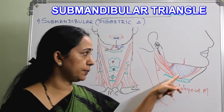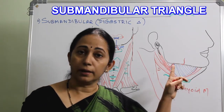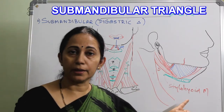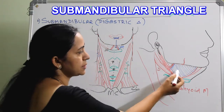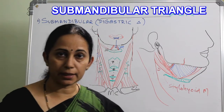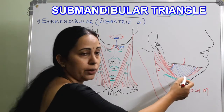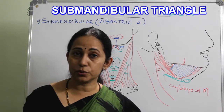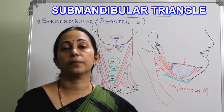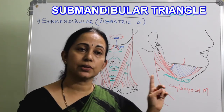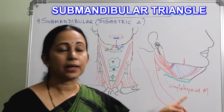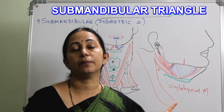The anterior belly of digastric arises from the digastric fossa on the inner surface of the mandible and is supplied by the nerve to mylohyoid. The mylohyoid muscle is supplied by the nerve to mylohyoid, which is a branch of the inferior alveolar nerve — itself a branch of the mandibular division of the trigeminal nerve. The same nerve also supplies the anterior belly of digastric.